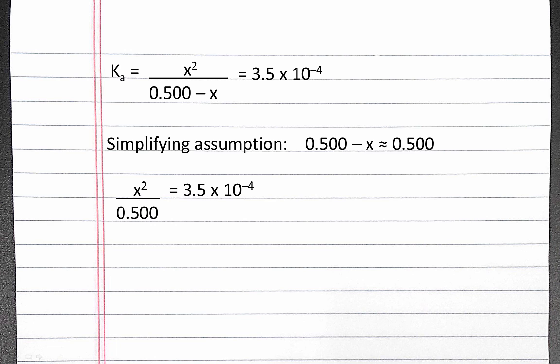Incorporating our simplifying assumption, we have x squared divided by 0.5 equals 3.5 times 10 to the negative fourth. We can multiply both sides by 0.5, so that x squared equals 1.75 times 10 to the negative fourth, and then take the square root of both sides to solve for x, and x equals 0.0132 molar.